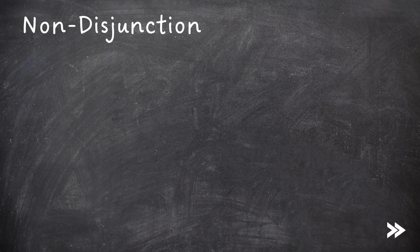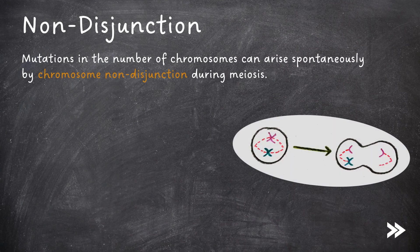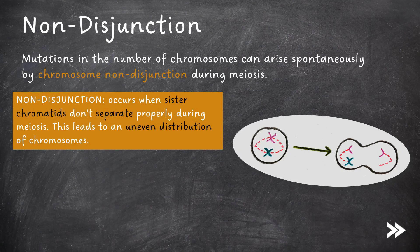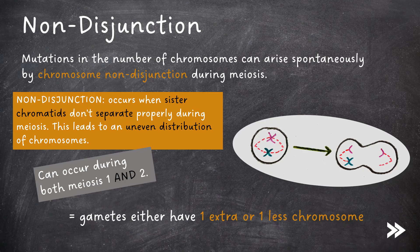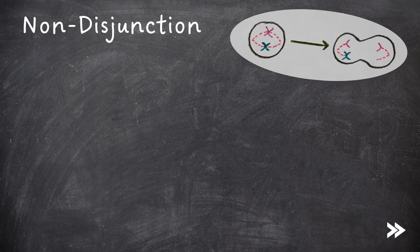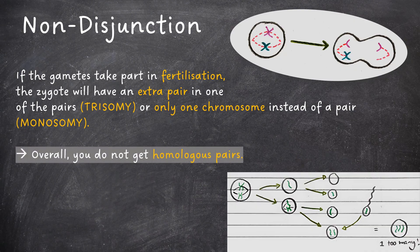Finally we have non-disjunction. Mutations in the number of chromosomes can arise spontaneously by chromosome non-disjunction during meiosis. Non-disjunction is when sister chromatids do not separate properly during meiosis, leading to an uneven distribution of chromosomes; this can occur during both meiosis 1 and 2. Overall, non-disjunction means that gametes have either one extra or one less chromosome. If these gametes then take part in fertilisation, the zygote will have either an extra chromosome in one of the pairs — known as trisomy — or only one chromosome instead of a pair — known as monosomy.